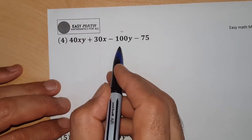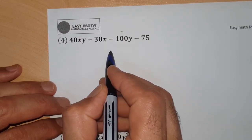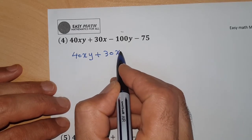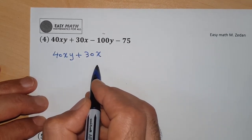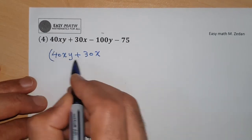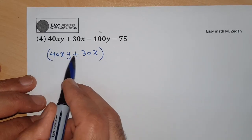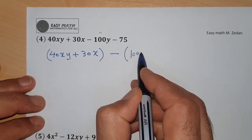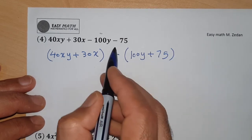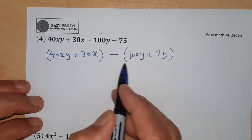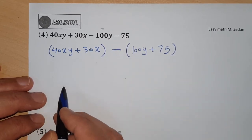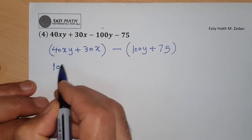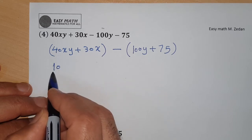Next: 40xy + 30x - 100y - 75. Group the first two terms and the last two. The first two terms are positive. Take the negative outside for the last two terms to get minus(100y + 75). For the first group, 40 and 30 are both divisible by 10, and x is common. Take out 10x.